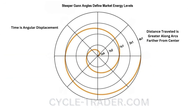Time is the angular displacement, and is the same for the small circle near the center as it is for the larger circles farther away. GAN's diagonal angles are the tool we use to measure these expanding energy levels. As energy increases to new levels and the growth spiral arcs upward, the GAN angles become progressively steeper.